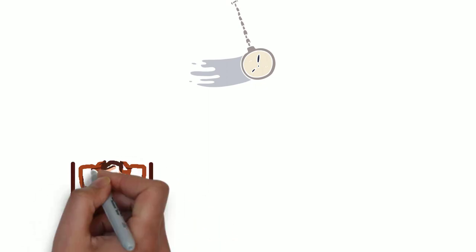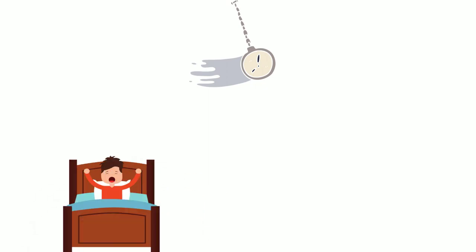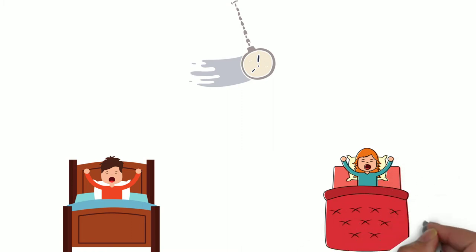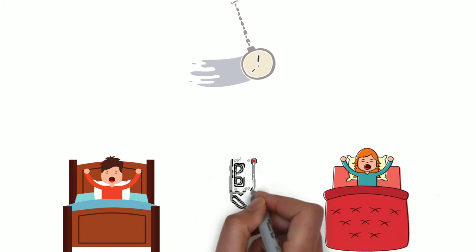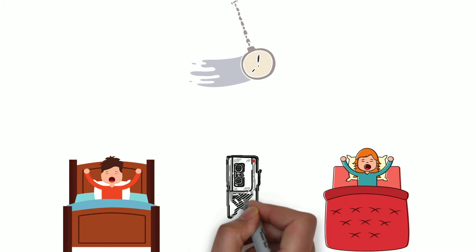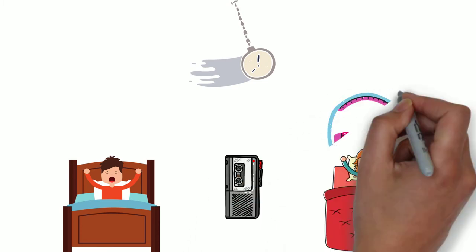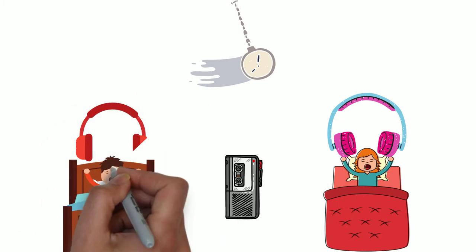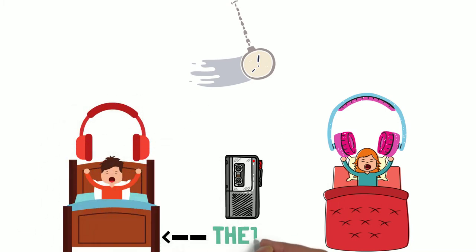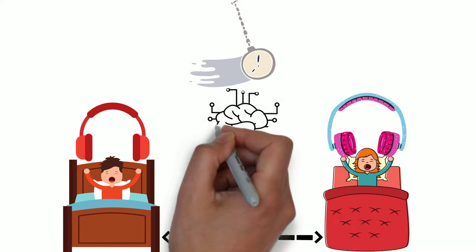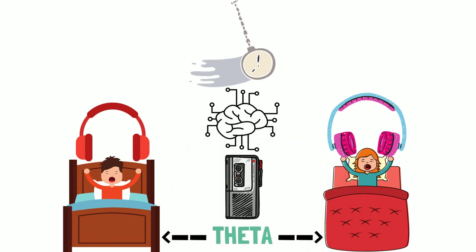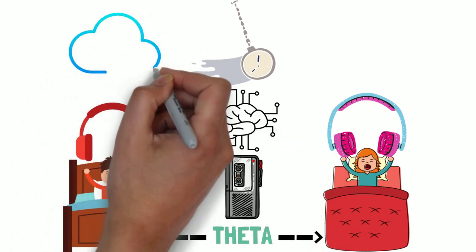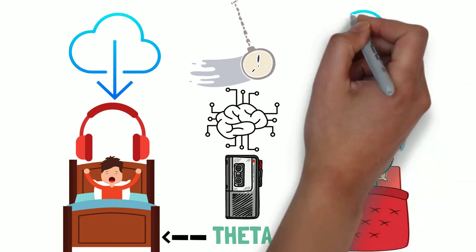And this is where you can use subliminal tapes to reprogram your subconscious mind. As you go to bed, if you put earphones on with subconscious programming to change whatever behaviors you want to change, as you go into theta, your alpha consciousness is now disappearing. And in that period of theta, which is twilight reverie, the recording of the tape is being downloaded straight into the subconscious. And that's how subliminal tapes work.